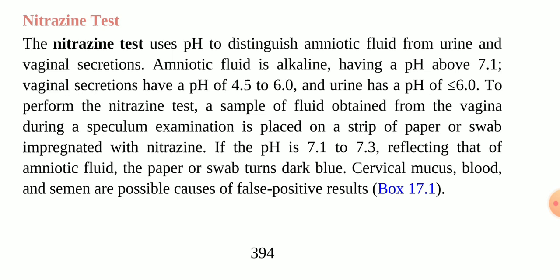We take the sample from the vagina and cervix. If there is no amniotic fluid, the pH will be acidic, because normally vaginal secretions are acidic. If there is no rupture of the amniotic membrane, the pH will correspond to the normal acidic vaginal pH.